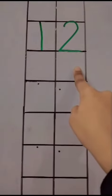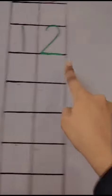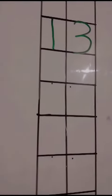2, 12, 1, 2, 12. 3, 13, 1, 3, 13. Counting 1, 2, 3.